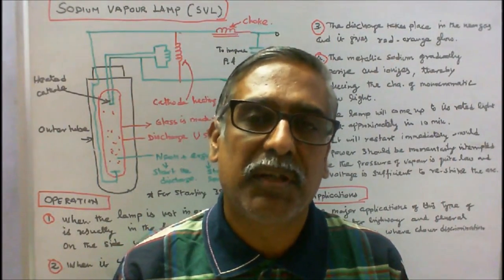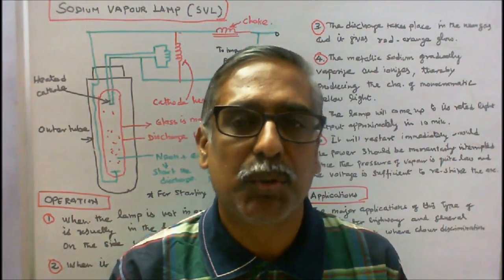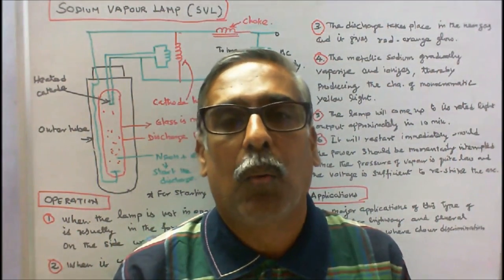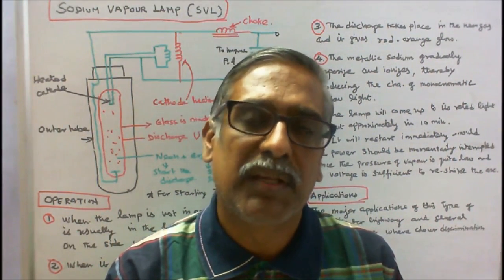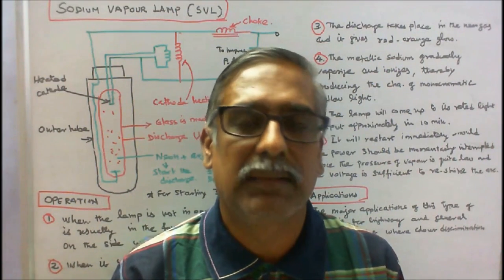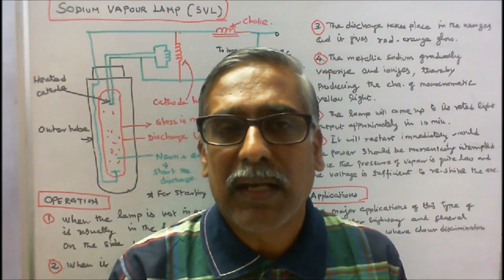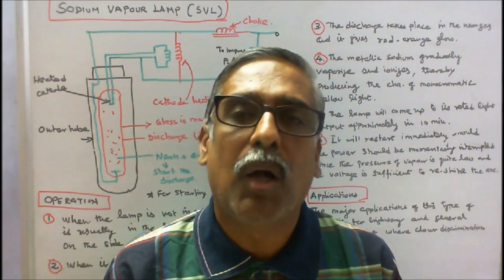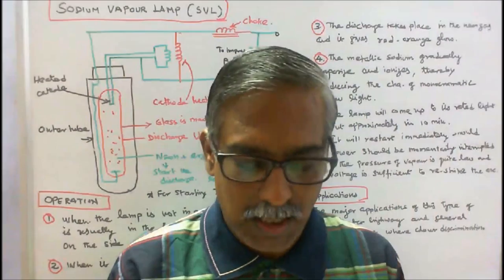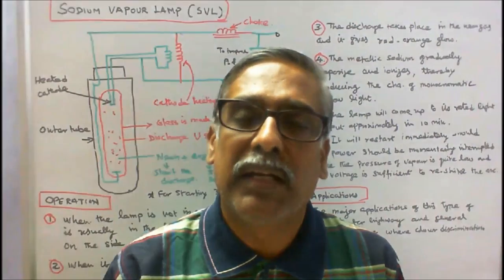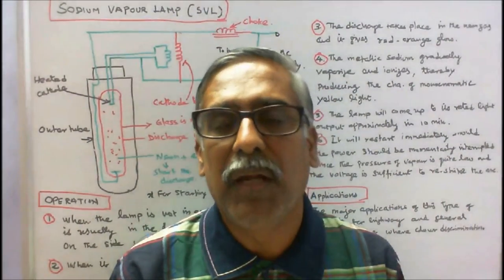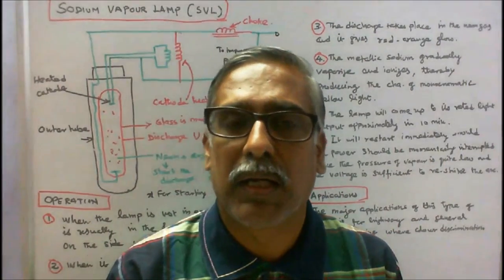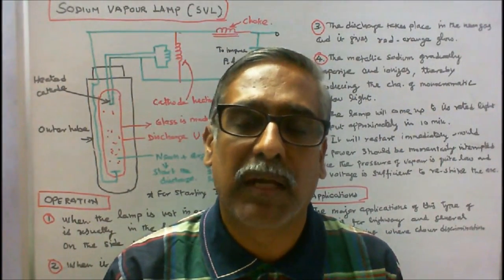A low pressure sodium vapor lamp contains two glass tubes. One is an outer glass tube made up of ordinary glass. The inner glass tube is called the discharge tube which is made up of borosilicate glass that is fitted with metal electrodes and filled with neon and argon and a little amount of metallic sodium.